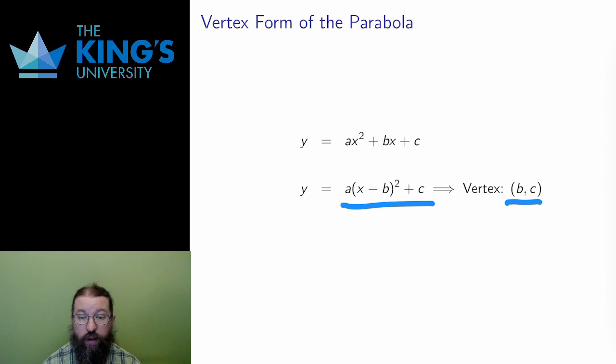The constant a, like in y equals ax squared centered at the origin, controls the width of the parabola and whether it opens upwards or downwards.